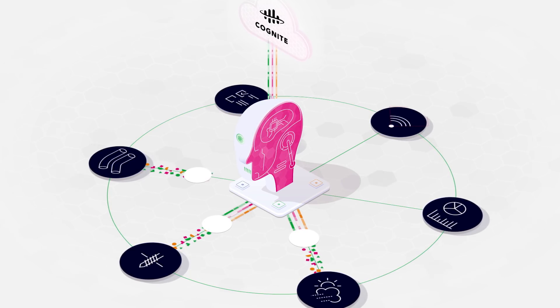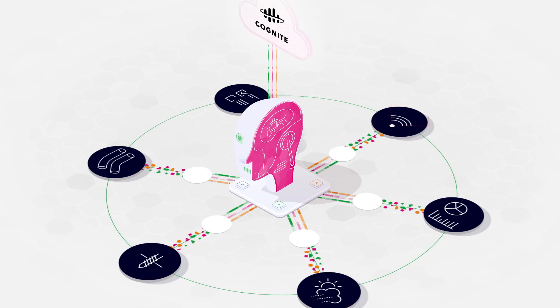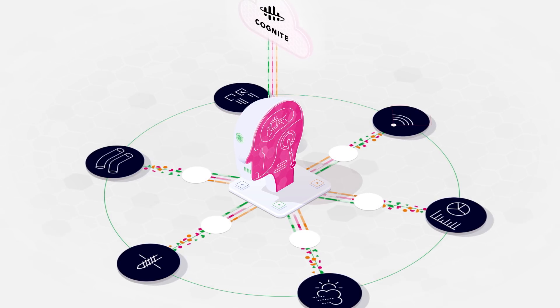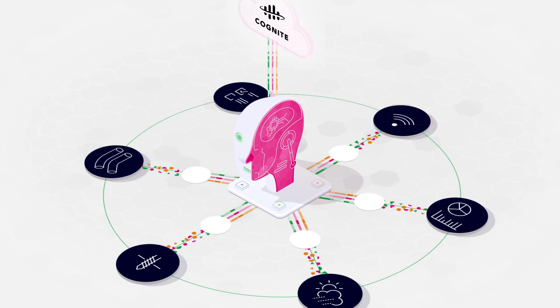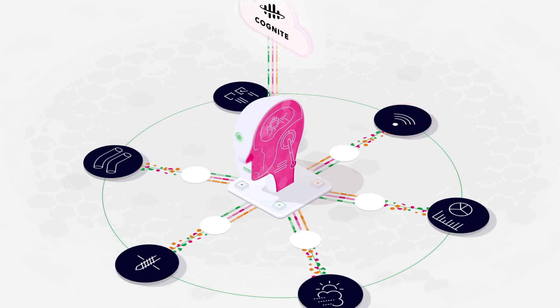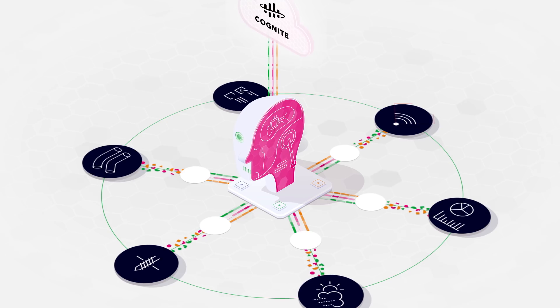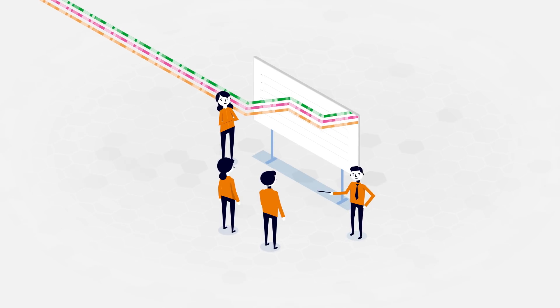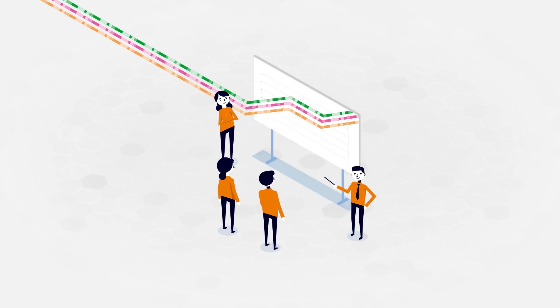The software organises data in ways that are meaningful to both algorithms and human users. We can then build applications, analyses and models on top of the contextualised data, revealing new insights about our equipment and processes, allowing our people to make more data-driven decisions and focus on optimising operations rather than looking for data.